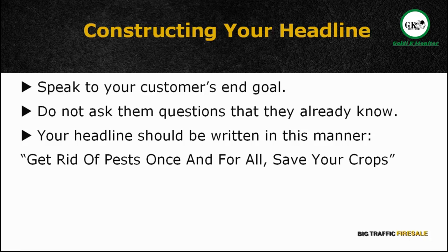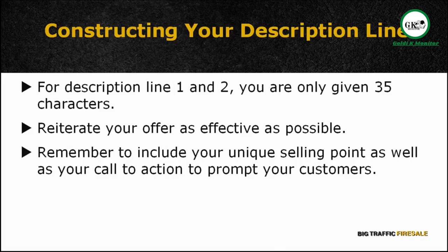The headline should be your main focus as it's what your prospects will read first. AdWords only allows a maximum of 25 characters per headline, so make every precious character count. One proven way to construct a compelling headline is by speaking to your customer's end goal — don't ask them questions they're already asking themselves. For example, if your customer is searching for pesticides for their crops, don't write 'Searching for Pesticides.' Instead, give them the answer they're looking for: 'Get rid of pests once and for all. Save your crops.' For description lines 1 and 2, you are only given 35 characters each, so reiterate your offer as effectively as possible and include your USP as well as your call to action.